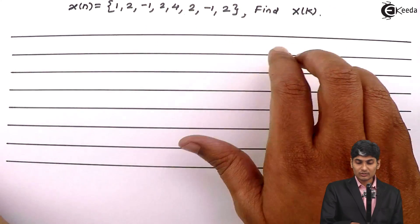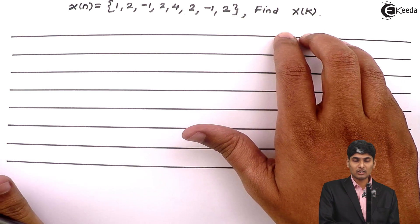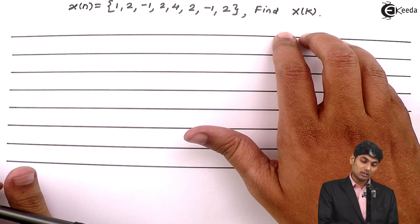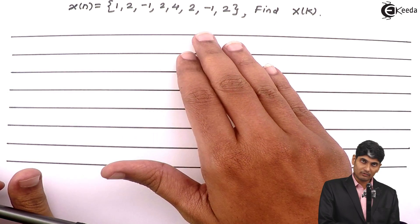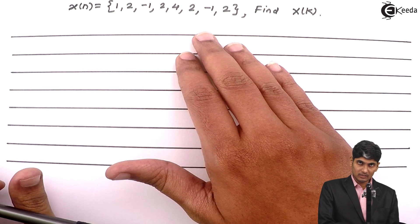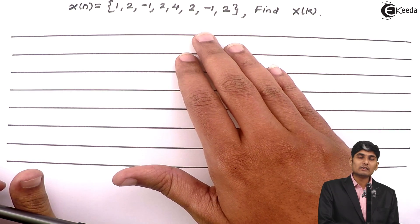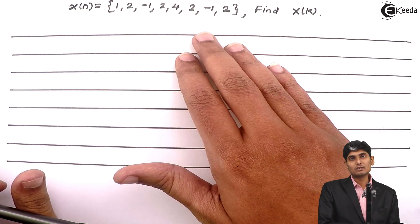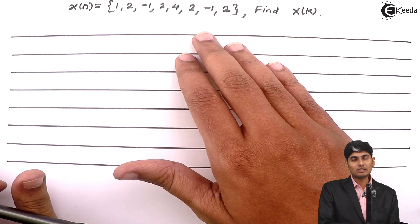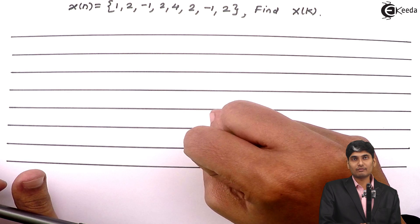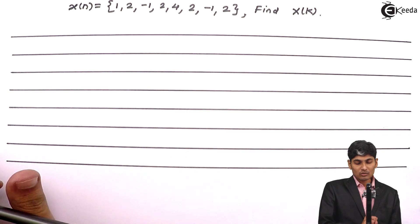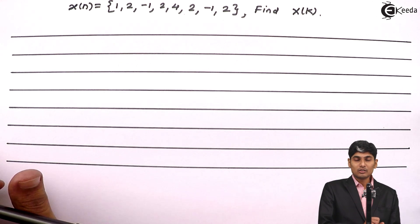Sometimes they might not straightforwardly ask you to find x of k. The problem might be asked as: given sequence x of n, find the DFT of x of n using DIF FFT flow graph. They will mention whether you have to use DIT FFT or DIF FFT flow graph. Whenever they mention DIF FFT flow graph, you have to follow the following steps.